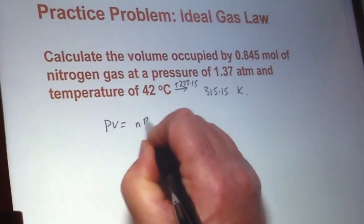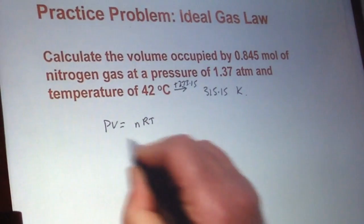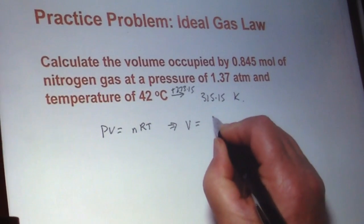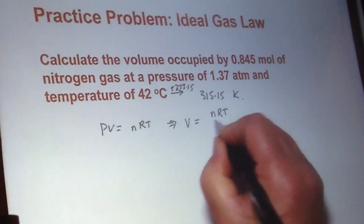So we have the PV equals nRT. So we can rearrange this to solve for volume, because that's what we're asked to find. So volume is then equal to nRT over P.